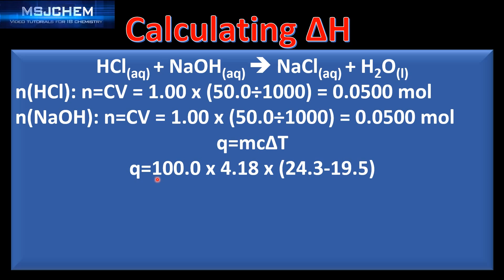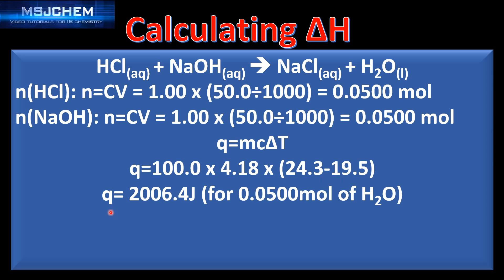For the mass, we make the assumption that 1 cm³ of sodium hydroxide and 1 cm³ of hydrochloric acid each equals 1 gram. So 50 cm³ of hydrochloric acid plus 50 cm³ of sodium hydroxide equals 100 cm³, which we say equals 100 grams. We then multiply by the specific heat capacity of water and by the change in temperature, which is 24.3 minus 19.5.